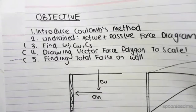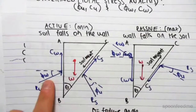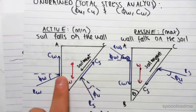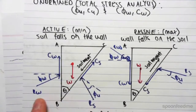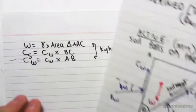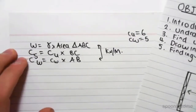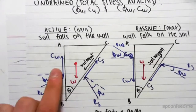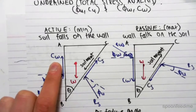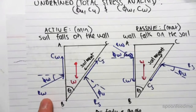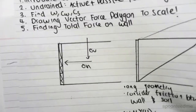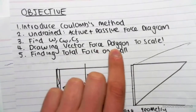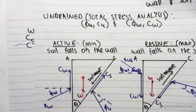To solve this problem, we need to draw a vector polygon. We need to draw in all these forces, and that will allow us to find Rw. We know from the previous video we can find W, CS, and CW. A lot of the time we want to know the force on the wall. We already know CW from the previous video, we can calculate that. But we need to find Rw, and the way we do that is by drawing this vector force polygon to scale, and we can scale off our answer for Rw.